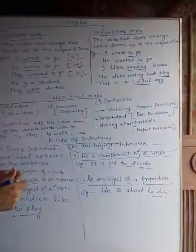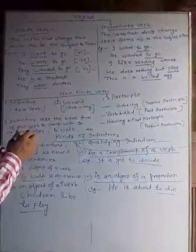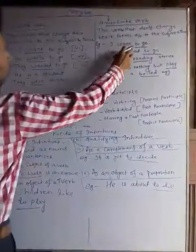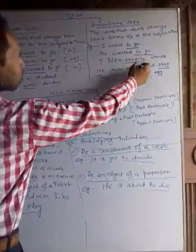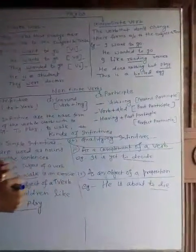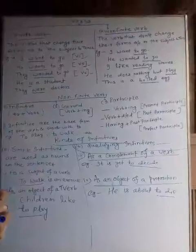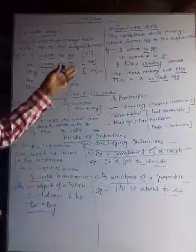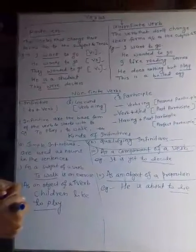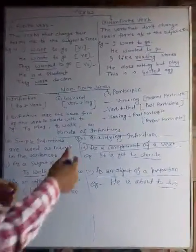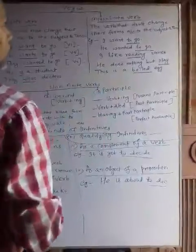This is a wild egg. You can see here the underlined verbs are non-finite verbs, because they are not changing their forms according to the tense or the subjects.